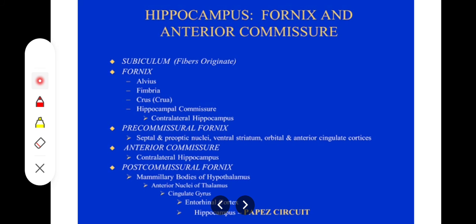The efferents of the limbic system include the alveus, fimbria, crus of the fornix, and ultimately the mammillary bodies — the fornix being a very important efferent. Some fibers also exit via the anterior commissure. Before the anterior commissure, we have the septal and preoptic nuclei of the hypothalamus. At the level of the anterior commissure, we have the hippocampal commissure connecting the contralateral sides of the hippocampus.